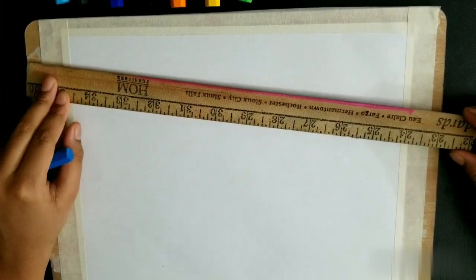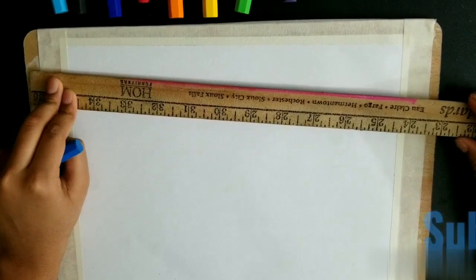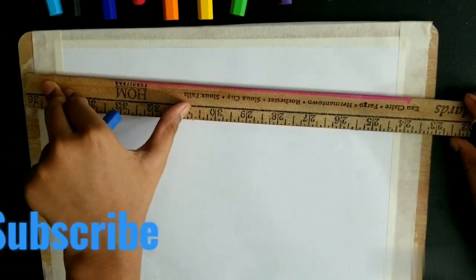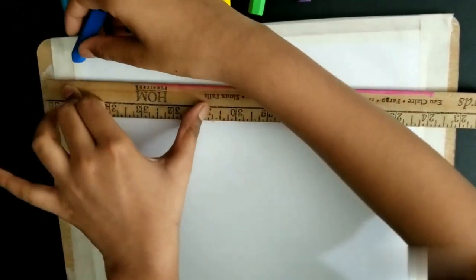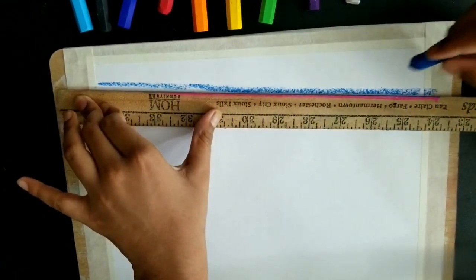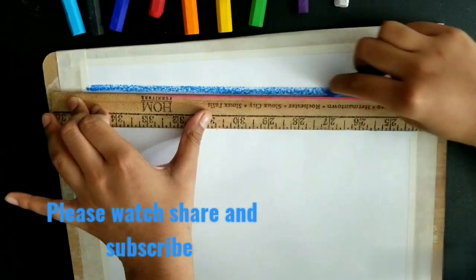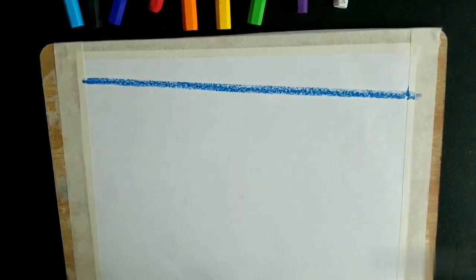Let's get started. First we need our ruler and let's take our blue. Set the ruler like this, a little slant, and start from here. Then draw the line just like that, a little bit slant, and color it in.